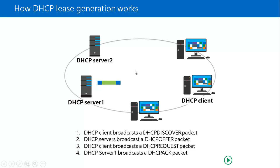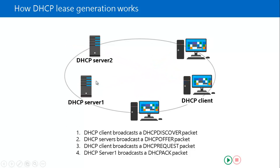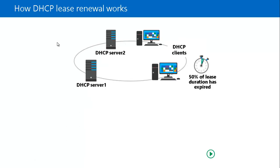In the fourth step, DHCP Server 1 sends a broadcast DHCP Acknowledgement (ACK), and only the DHCP client receives and accepts that IP address while the other computers discard the packet.